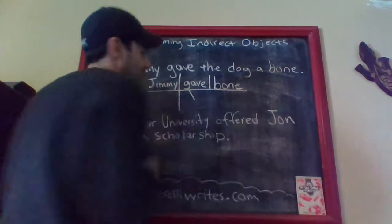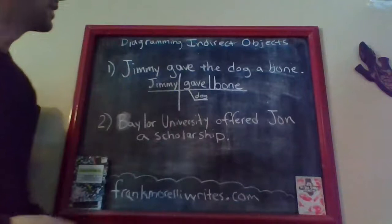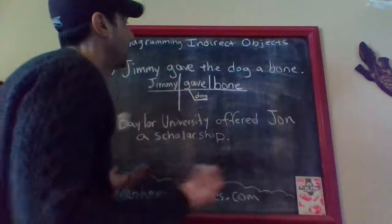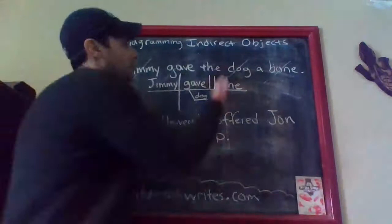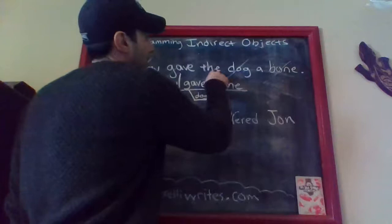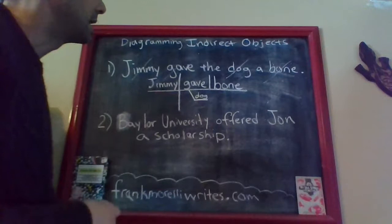The way you write an indirect object is that since it's connected to the verb, you create a little platform line — it's kind of like a slanted line with a dog leg on it. Interestingly enough, we're putting the word 'dog' on it. Now we only have a few words left. Sometimes when doing a diagram you can lose track of words already placed, so I like to cross them off: we've used Jimmy, gave, dog, and bone — only two words left.